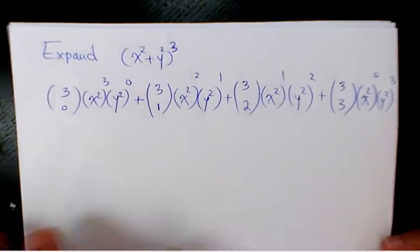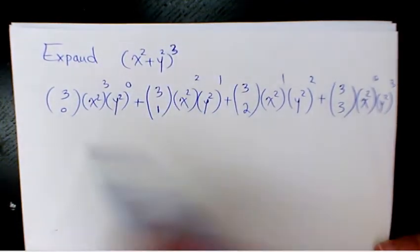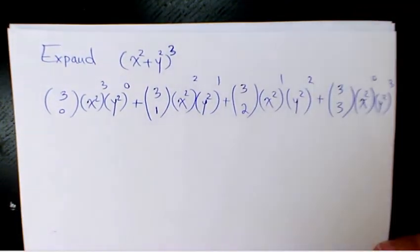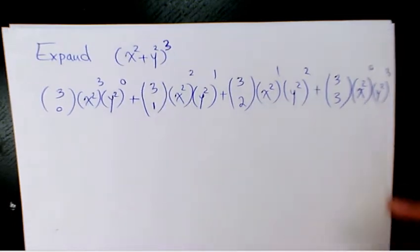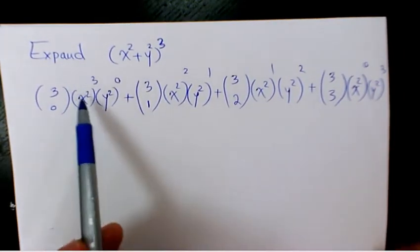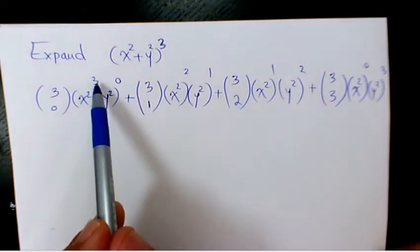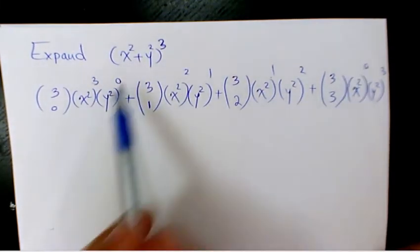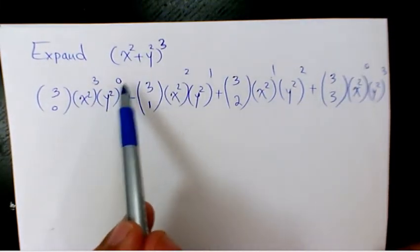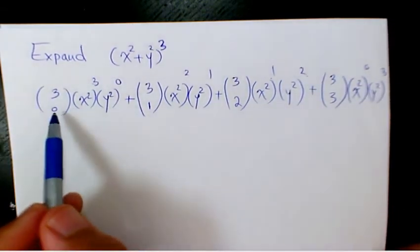When we have to the power of 3, we're going to have 4 terms. If it's to the power of 5, for example, you're going to end up having 6 terms. The exponent of the first term is reducing — 3, 2, 1, 0 — and the other one is increasing from 0 to 3: 0, 1, 2, 3.